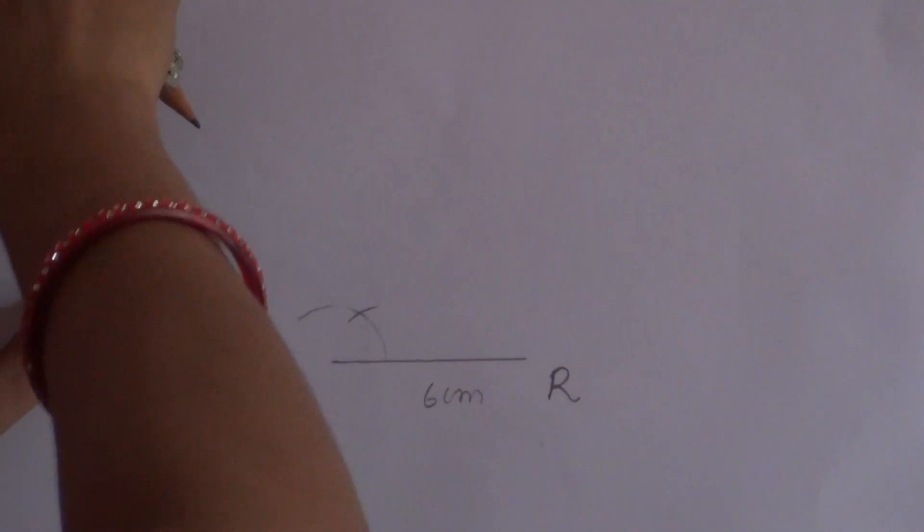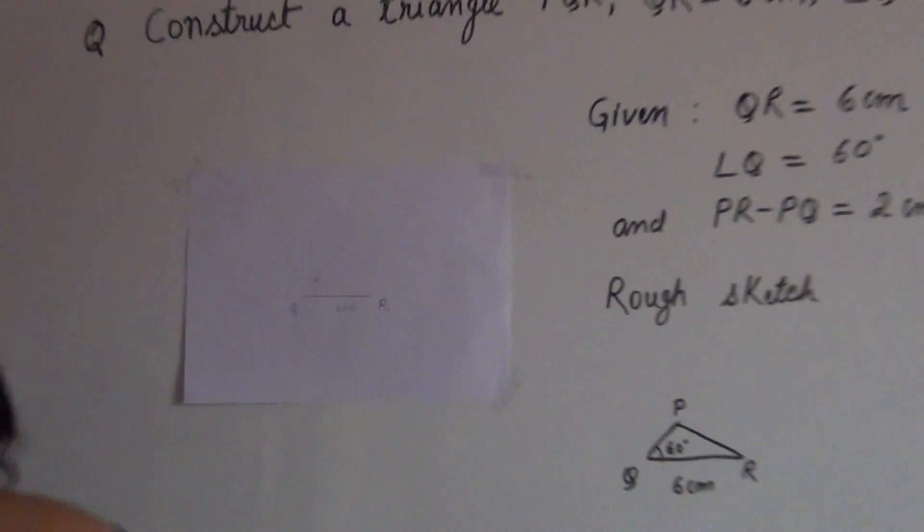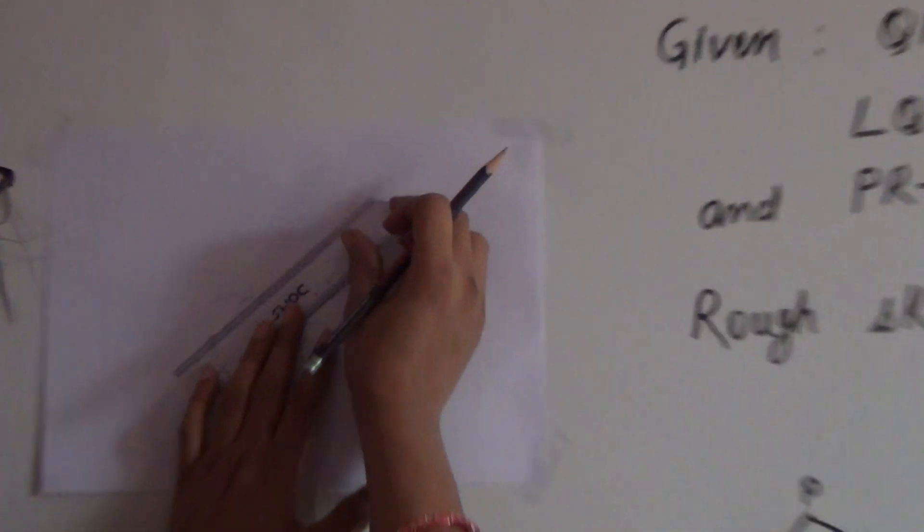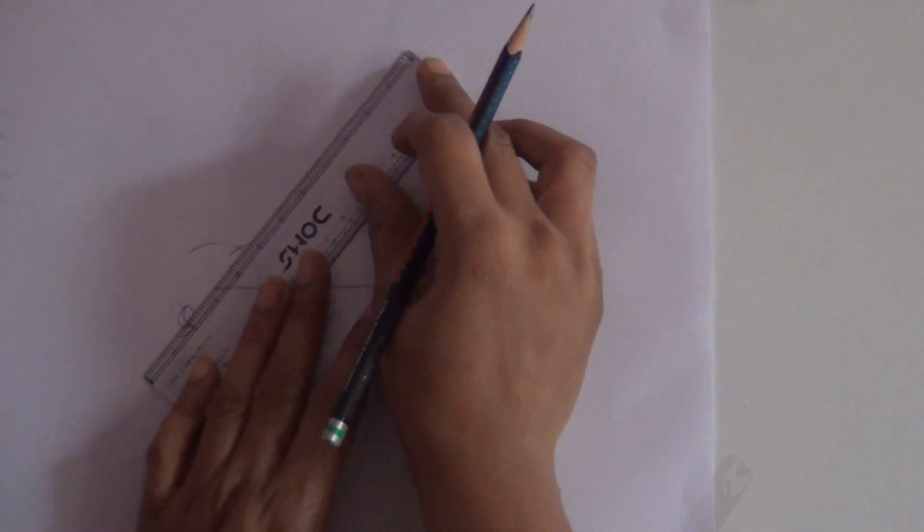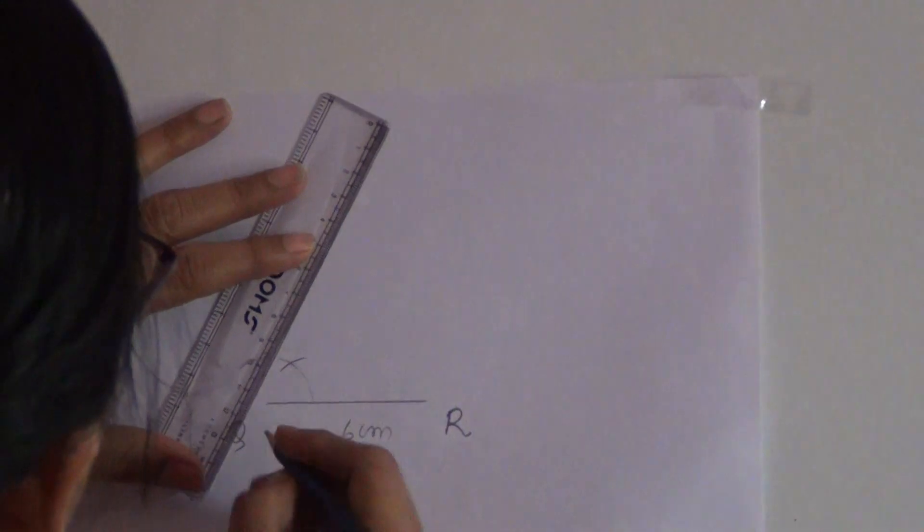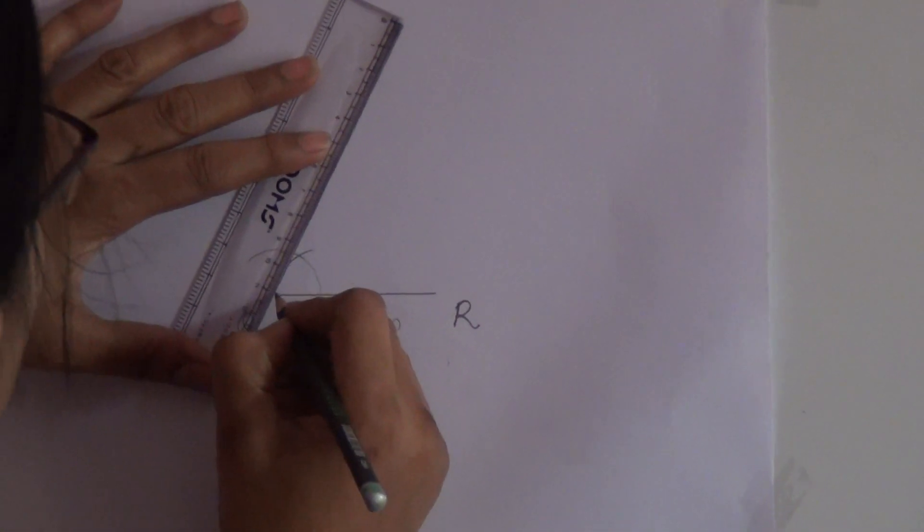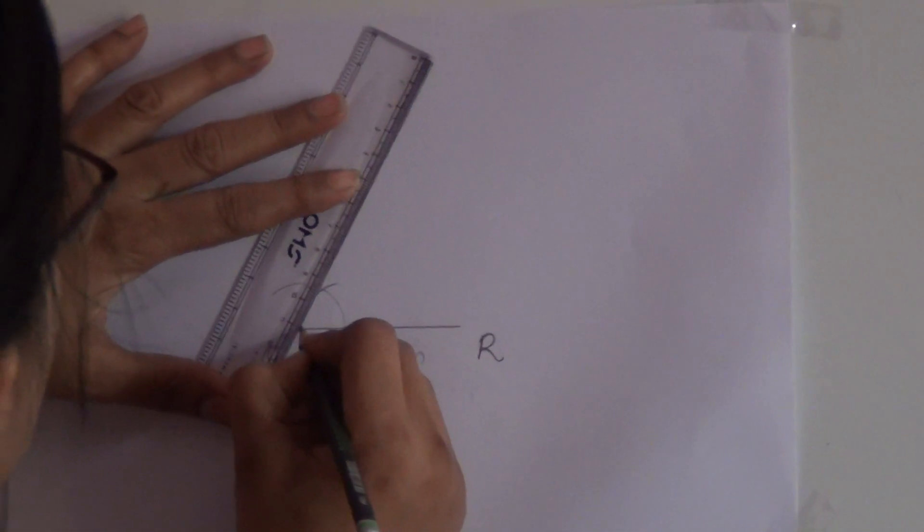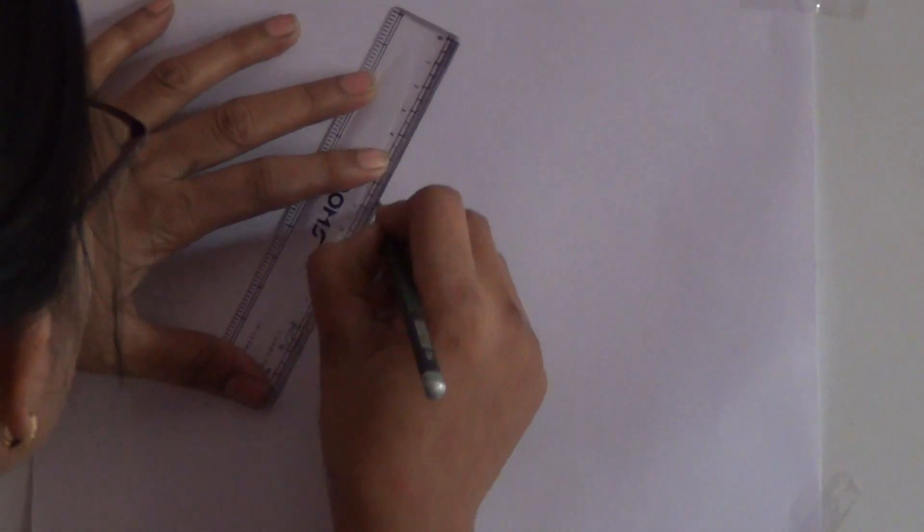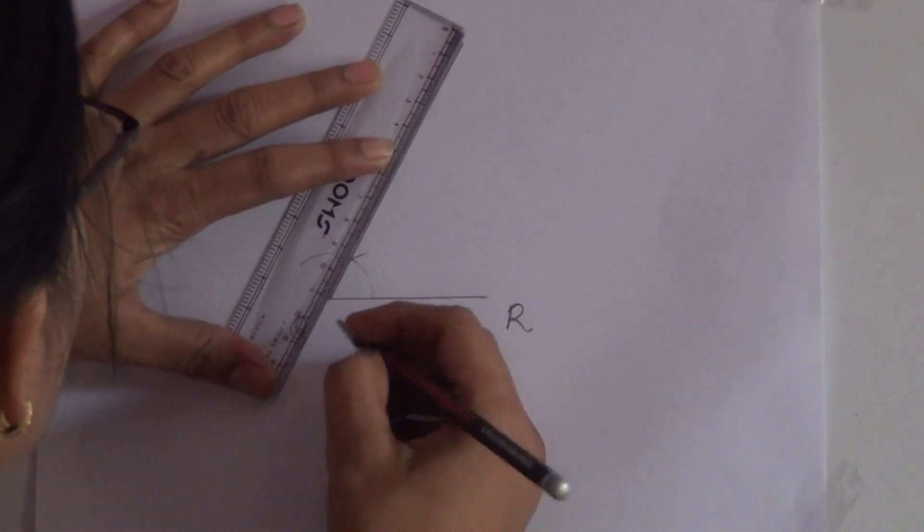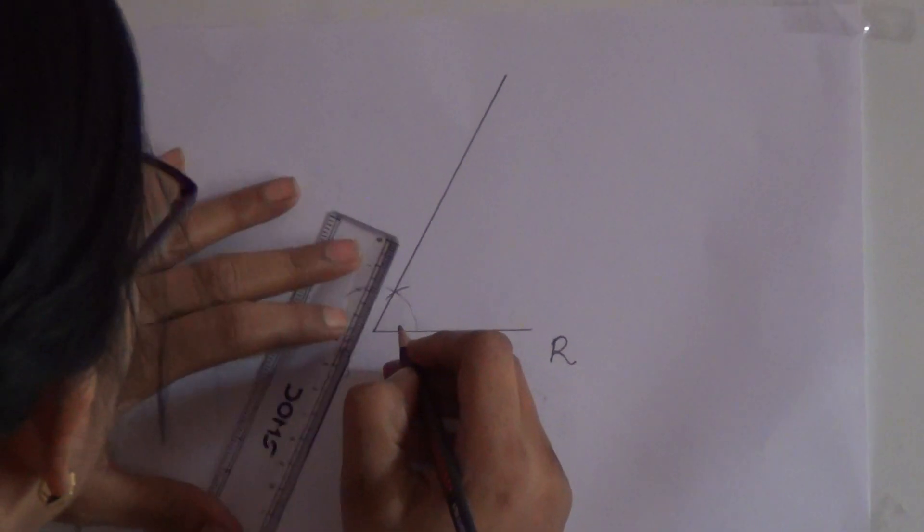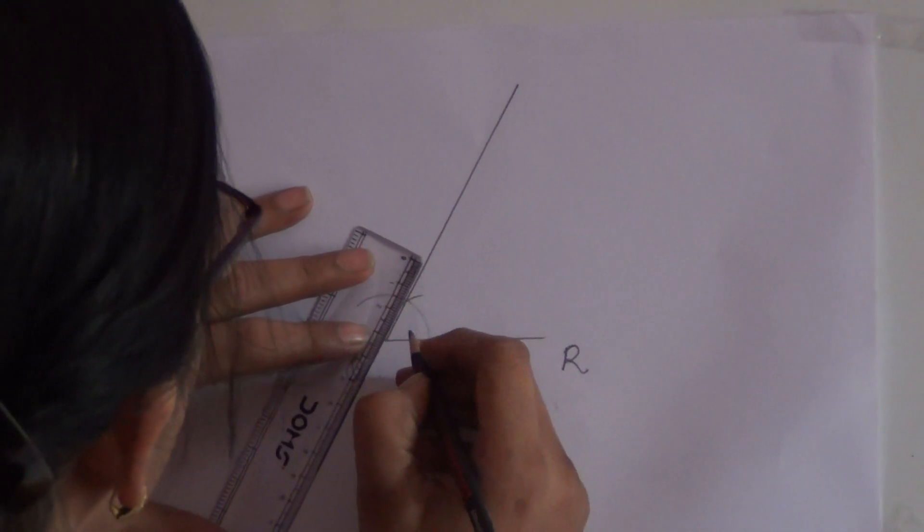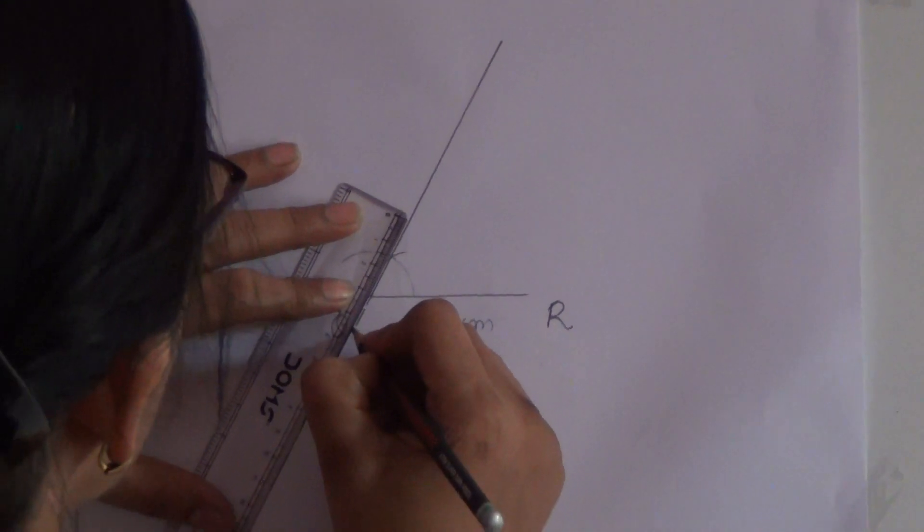Just a moment, children. Now we just join P to this point of intersection of the arcs. We can do this way, it will be better. But one thing I would do here: I will extend this line in the backward direction also.